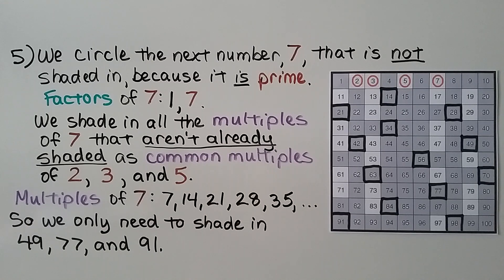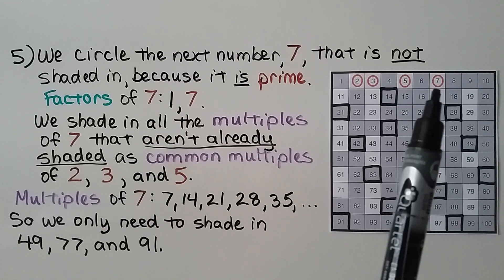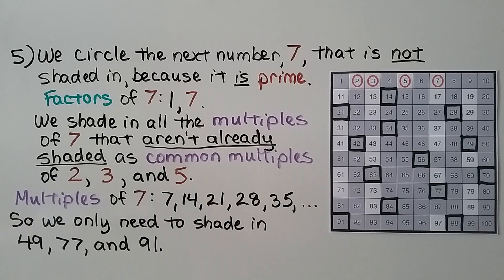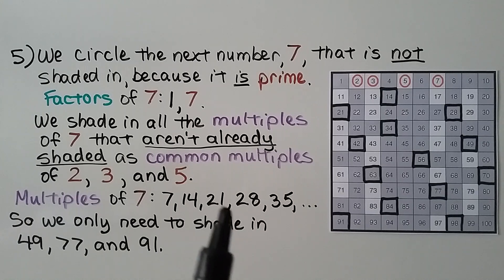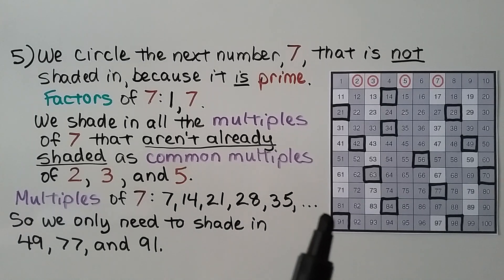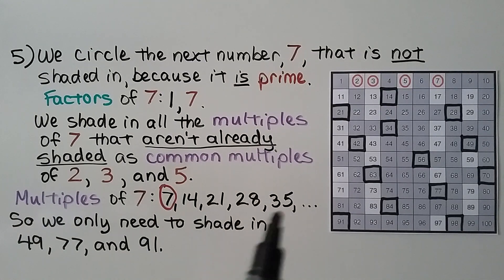Next, we circle the number 7, which is not shaded in because it is prime. The factors of 7 are 1 and 7. We shade in all the multiples of 7 that aren't already shaded in as common multiples of 2, 3, and 5. The multiples of 7 are 7, 14, 21, 28, 35, and so on. We circle the 7 and make sure the multiples of 7 are shaded in.